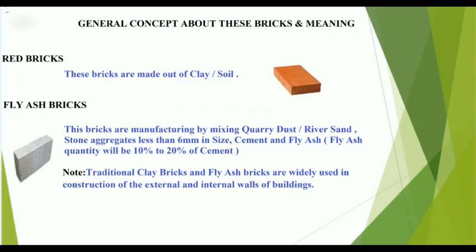We will discuss the general concept and meaning of these bricks. First are red bricks — these bricks are made up of clay or soil. Fly ash bricks are manufactured by mixing quarry dust or river sand, stone aggregate less than 6mm in size, cement, and fly ash. The fly ash quantity will be from 10 to 20 percent of cement.